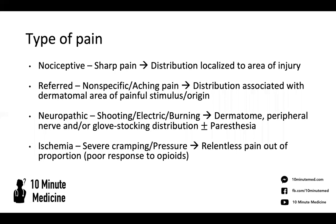There are different types of pain you need to be aware of — this is a generalization, so take it on a case-by-case basis. Nociceptive pain is directly at the nociceptors and usually causes a sharp, localized pain at the area of injury. Referred pain — something you'll see in people with gallstones, for example, where they have referred pain to the shoulder — is a nonspecific aching pain that distributes according to the dermatomal area, referring away from the actual site of injury.